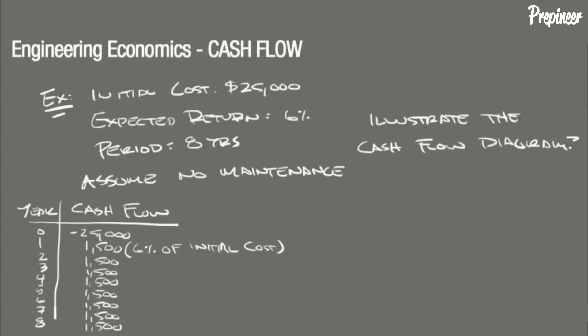The next step is to summarize these expenses and credits in a graphical form on a cash flow diagram. We are analyzing over an eight-year period, so we draw a horizontal line with marks representing one-year periods all the way through year eight. The original cost of the equipment was $25,000, illustrated at the beginning of year one as an expense — a downward arrow — because it's going out of the business owner's account.